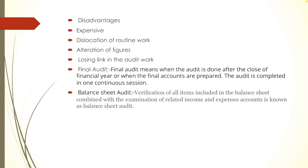Then comes alteration of figures — after the accounts have been audited, the figures may be fraudulently altered by the staff. Because the business staff will know at what intervals the auditor will be visiting the organization, they may alter the figures after accounts have been audited. Then comes losing link in the audit work — as the work is not completed continuously, the auditor may lose continuity and certain questions and inquiries may be left unanswered.